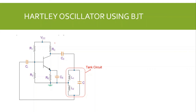For the Hartley oscillator using the BJT, we use a common-emitter bipolar junction transistor configuration. The common-emitter BJT amplifier provides a phase shift of 180 degrees, and the tank circuit provides the remaining 180 degrees, giving an overall phase shift of 360 degrees — hence the common-emitter configuration is chosen. The output and input decoupling capacitors and the bypass capacitor CE are part of the circuit. Voltage divider biasing is used for the common-emitter amplifier. The tank circuit consists of two inductor elements and one capacitor element.